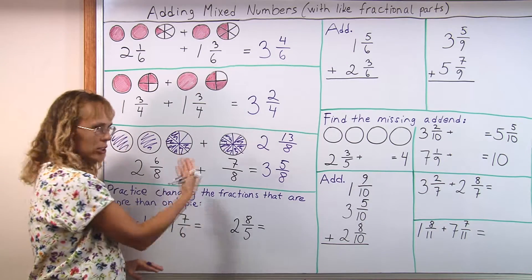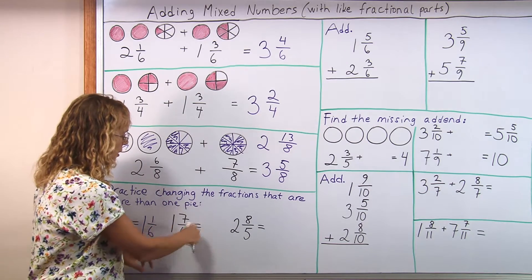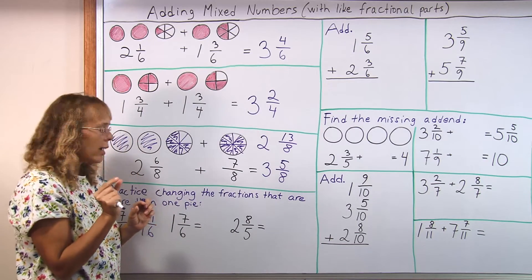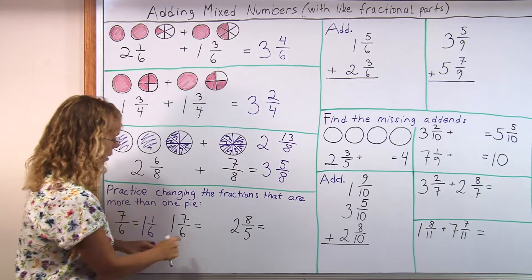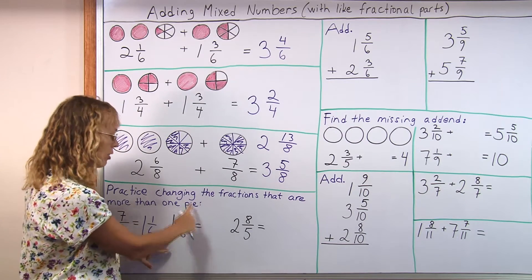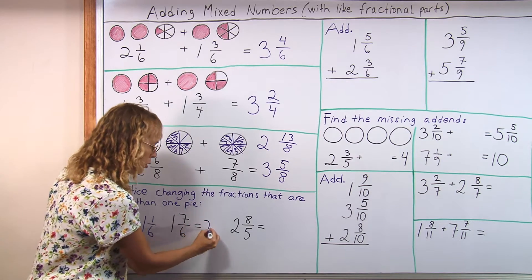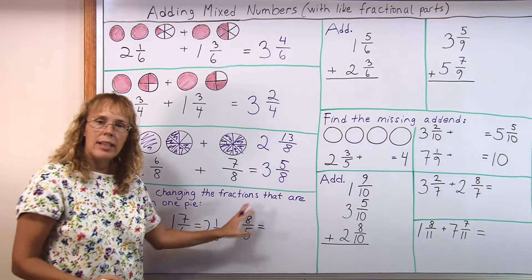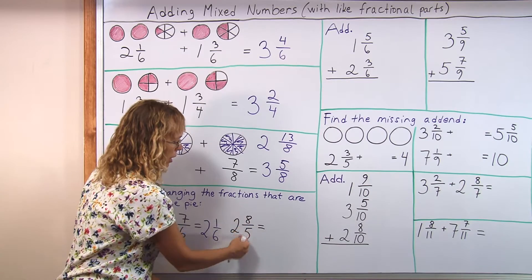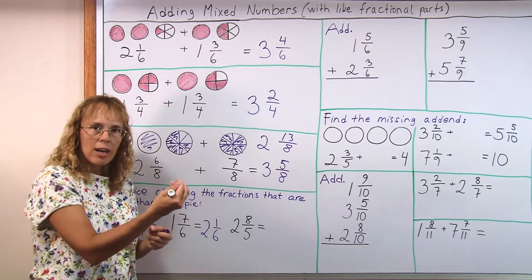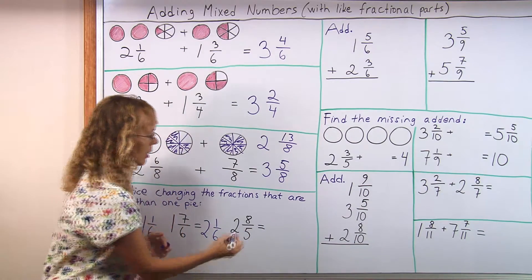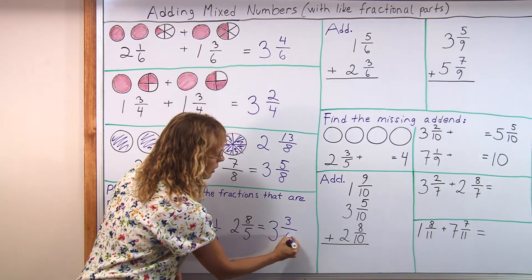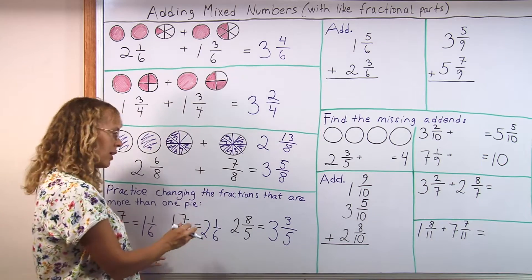So the 7 sixths, again, think that 6 of those sixths makes one whole pie and then there's one sixth left. And so since here is one whole pie and another one made from those, it's 2 whole pies and 1 sixth. Or here we have 2 whole pies and 8 fifths, but from here we can make another whole pie. Because 5 fifths makes a whole pie, we get 3 whole pies and then we have 3 fifths left over. So students can practice this process separately if they need to.